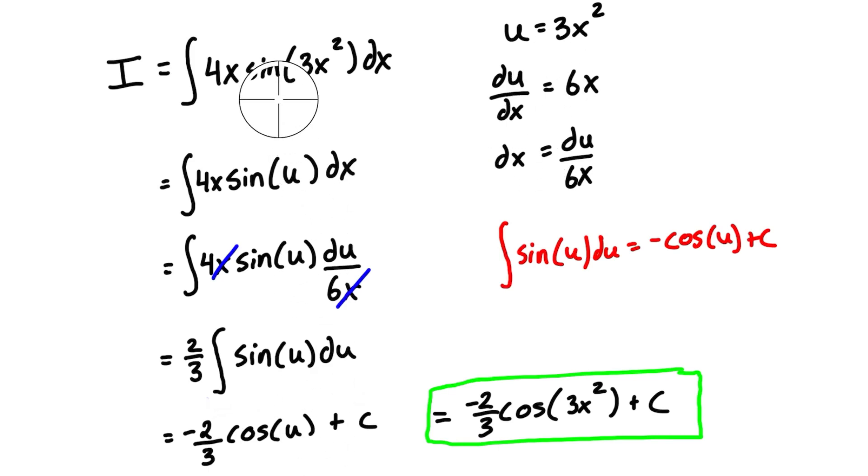If the integrand contains a natural logarithm, then we're just going to set u to what's inside the logarithm, basically inside those brackets as well. And if the integrand contains a power of an expression, for example, like 2x squared plus 1 all squared, then we're going to set everything that's inside those brackets again to u, and again follow these same steps.